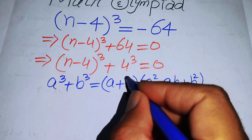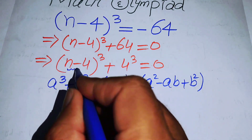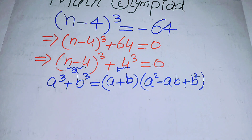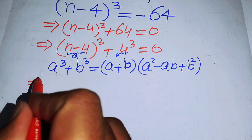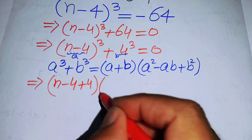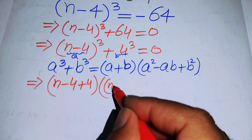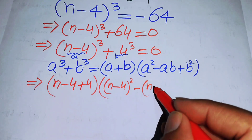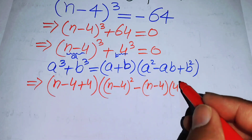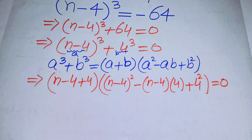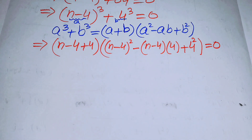We apply the sum of cubes formula where a = (n - 4) and b = 4. Substituting these values, we get: (n - 4 + 4) × [(n - 4)² - (n - 4)(4) + 4²] = 0.